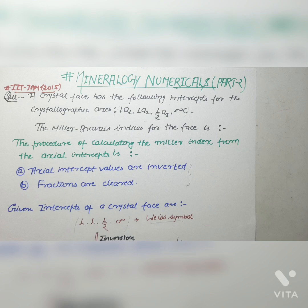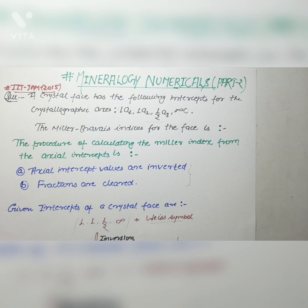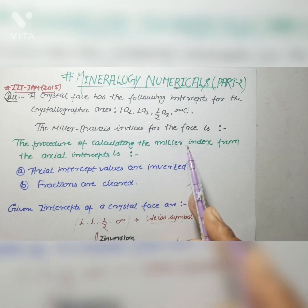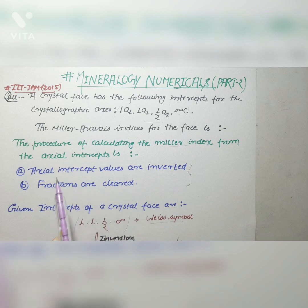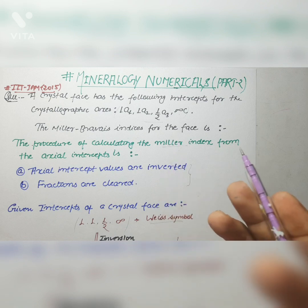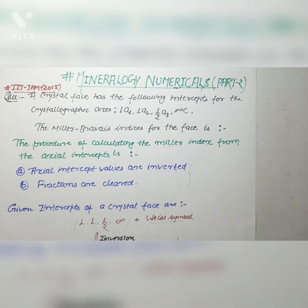Miller indices is simply the reciprocal of the Weiss symbol, and it is used to describe the orientation of crystal faces, cleavages, and other planar properties. There are two steps in finding the Miller index from any given Weiss symbol or axial intercepts. The first step is that the axial intercept values should be inverted. The second step is if there is anything in fraction, the fraction should be cleared.